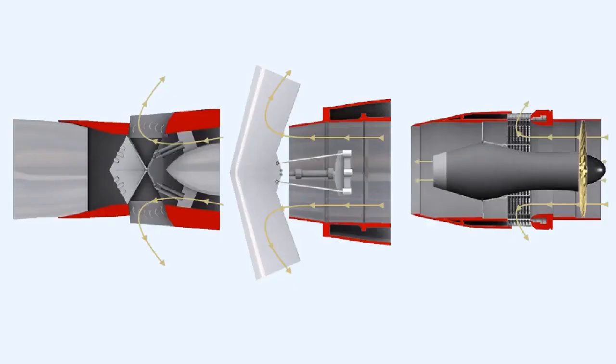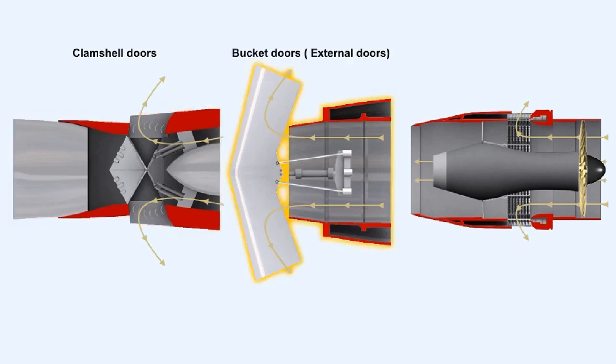There are three basic thrust reversal systems presently in use. They are: clamshell doors, bucket doors, and blocker doors.